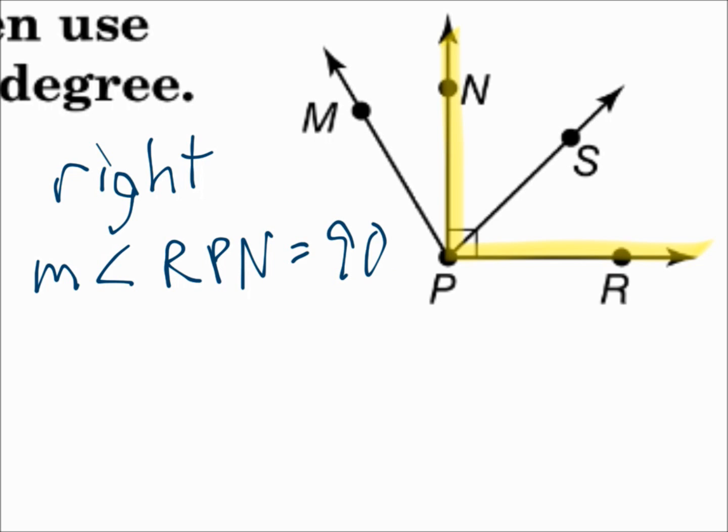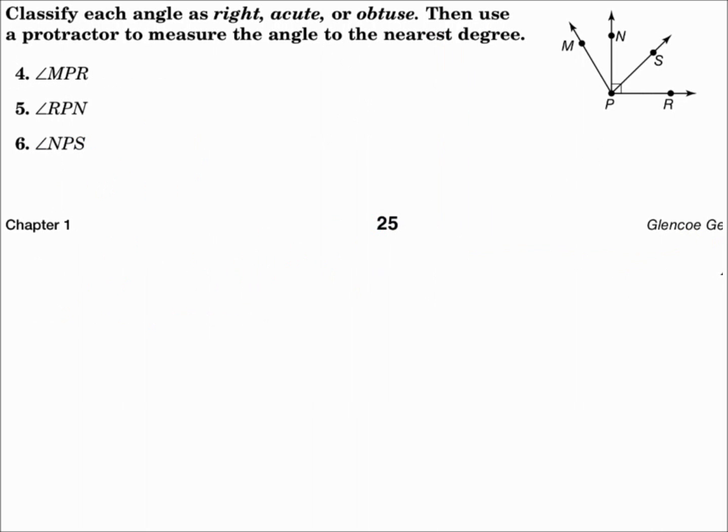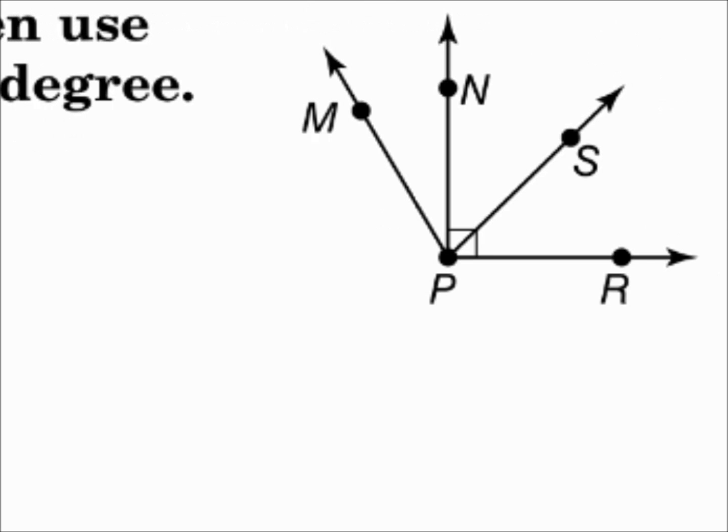Notice also, when you're doing the measure of an angle, an M for measure, angle for the angle, and then name the angle. Six, angle NPS. Angle NPS is right there. That is definitely smaller than 90 degrees, so it's an acute angle. If you measured it with a protractor, the measure of angle NPS is 45 degrees.